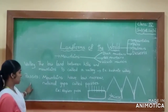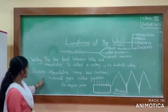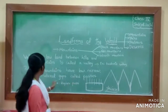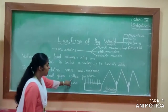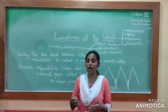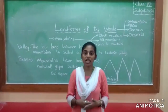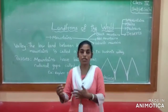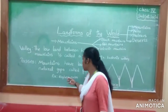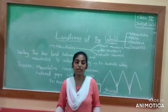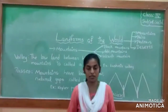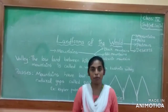Next are passes. Passes are nothing but the low, narrow, natural gaps in mountains called passes. These passes connect from one place to another through the mountains. For example, we have the Khyber Pass, which connects Pakistan and Afghanistan, making a way between the two places. Those are called passes.